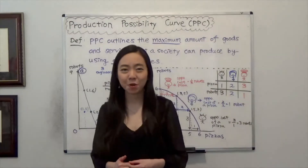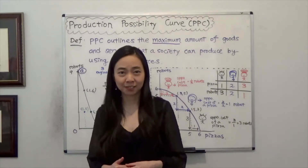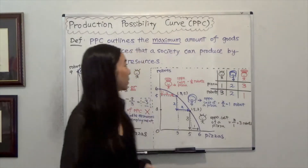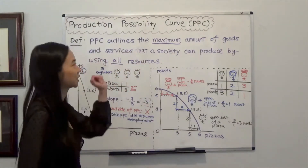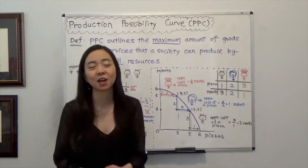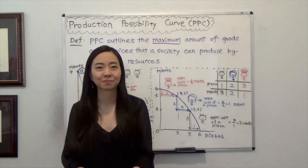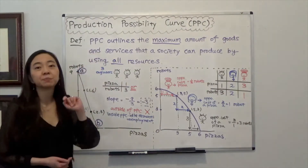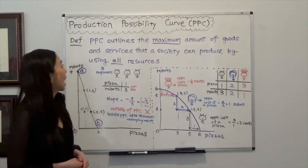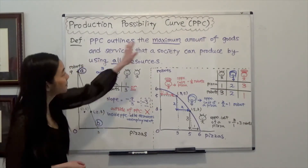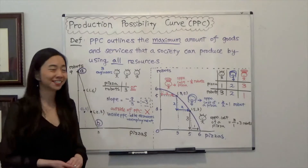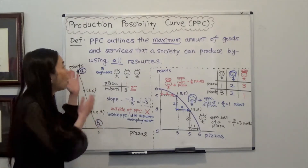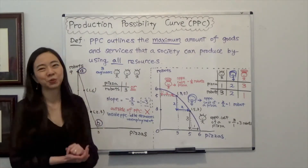Hello, everyone. My name is Iris Franz. I'm going to talk about Production Possibility Curve, also known as the PPC. Bottom line first: the Production Possibility Curve outlines the maximum amount of goods and services that the society can produce, given all its resources.